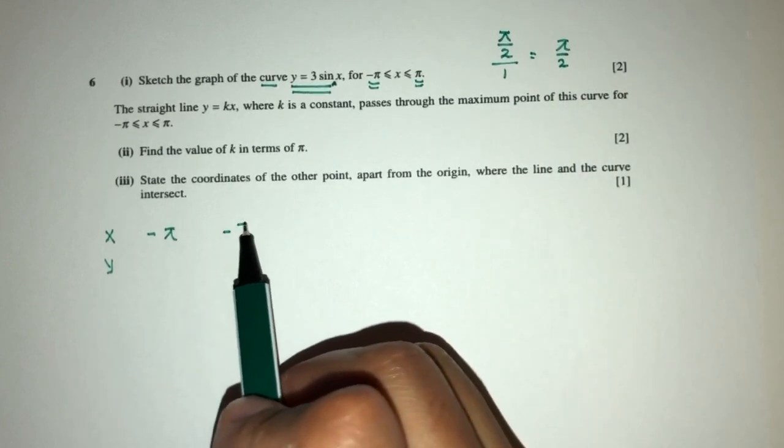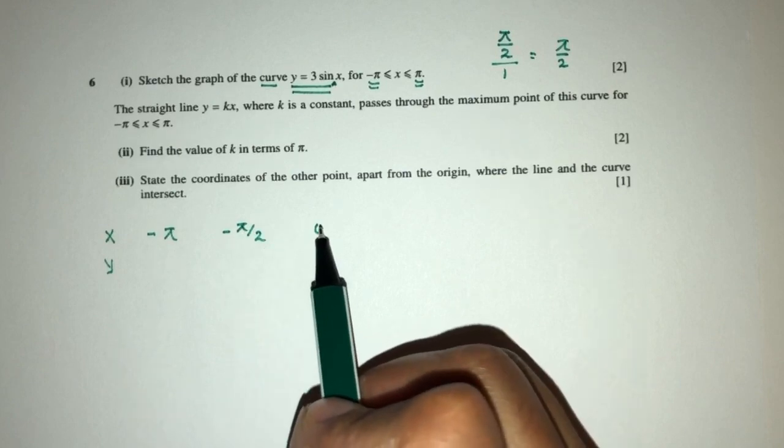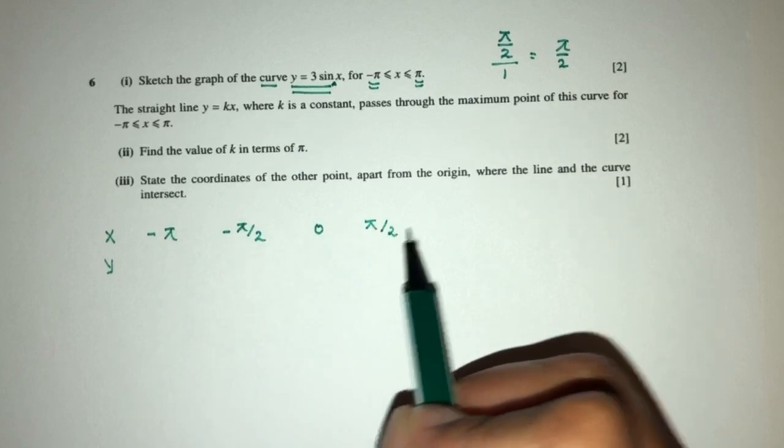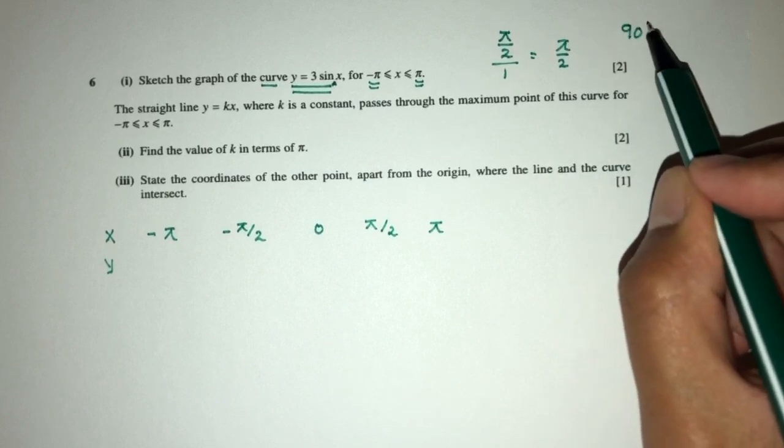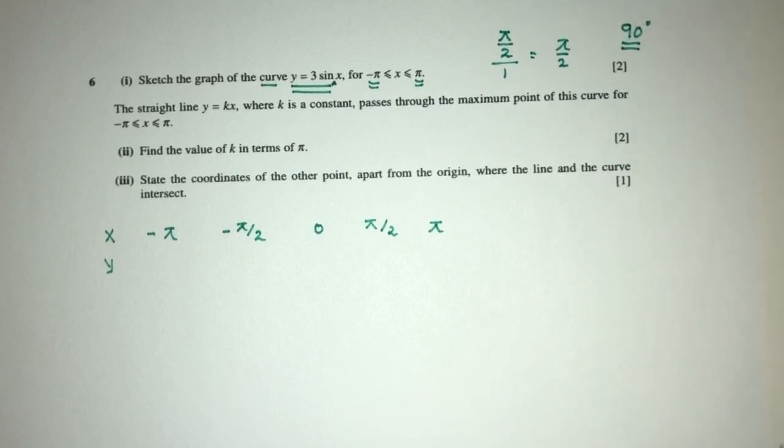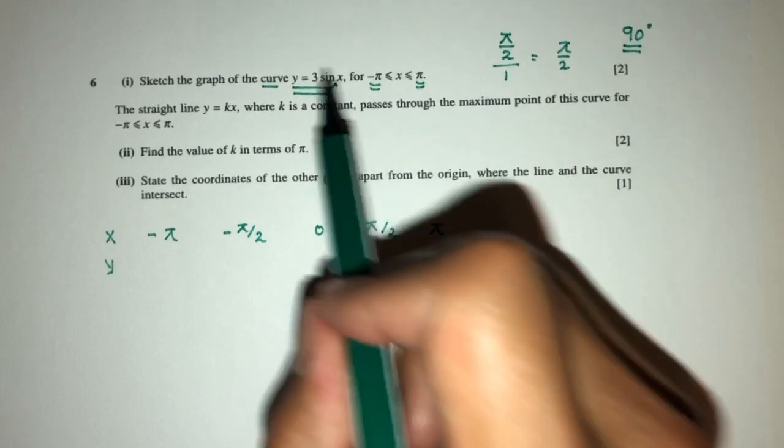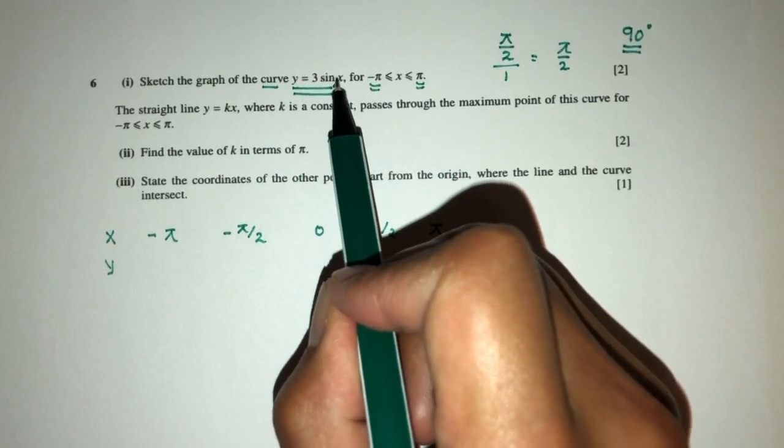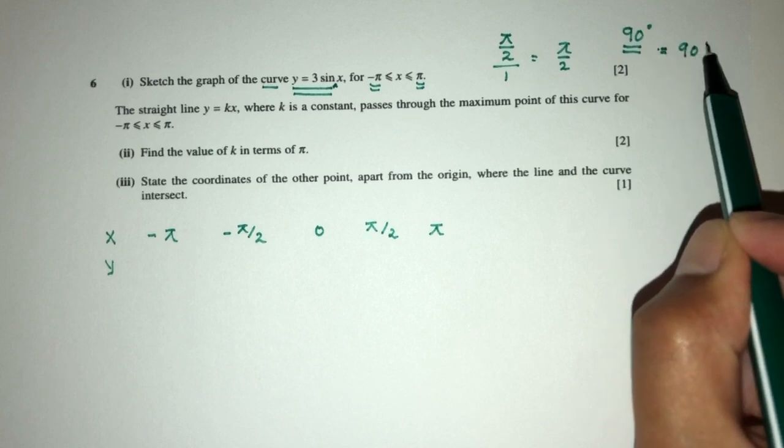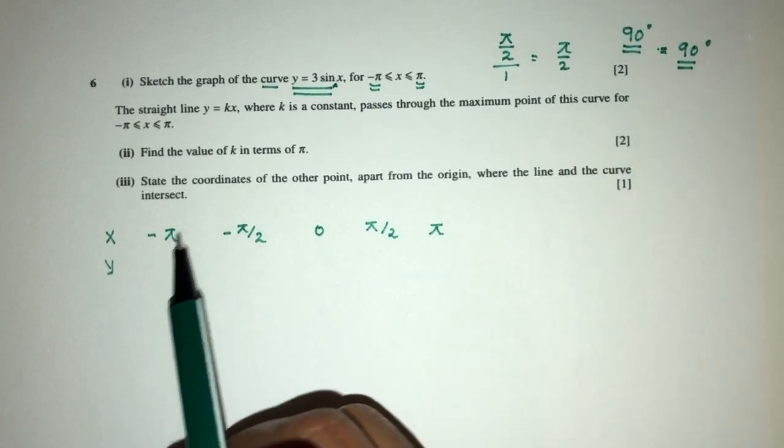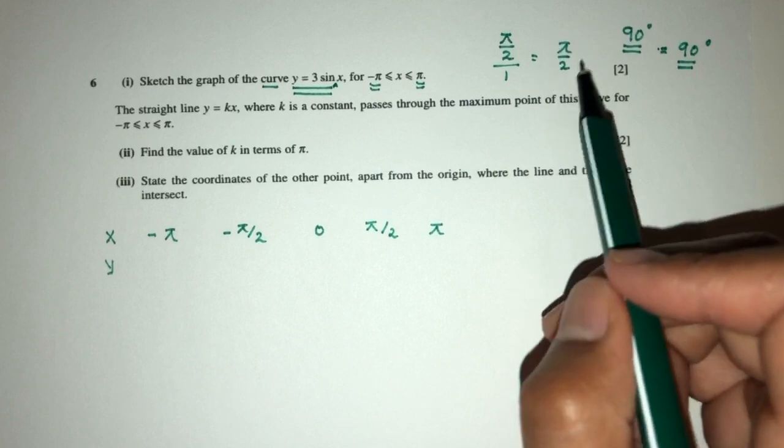So the interval will be pi by 2, so this will be plus pi by 2, minus pi by 2, then 0, then pi by 2, and then pi. Again, pi by 2 is simply 90 degrees. So initially we always begin with 90 and we divide by the value which is in front of x.